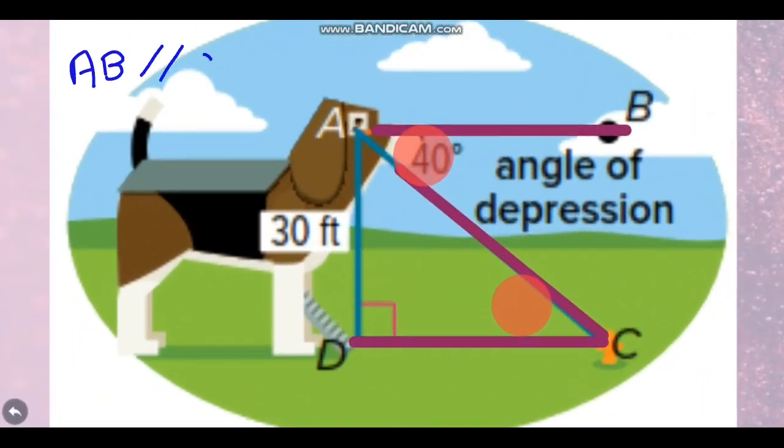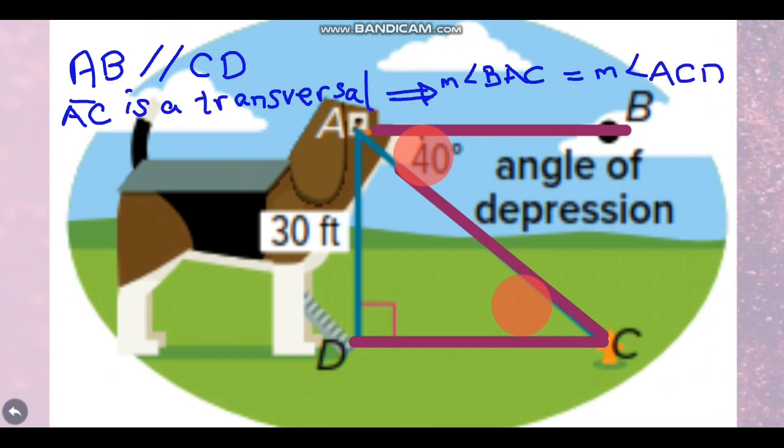Because AB and DC are parallel sides and AC is a transversal between them, this means that angle BAC and angle ACD are equal alternate angles.